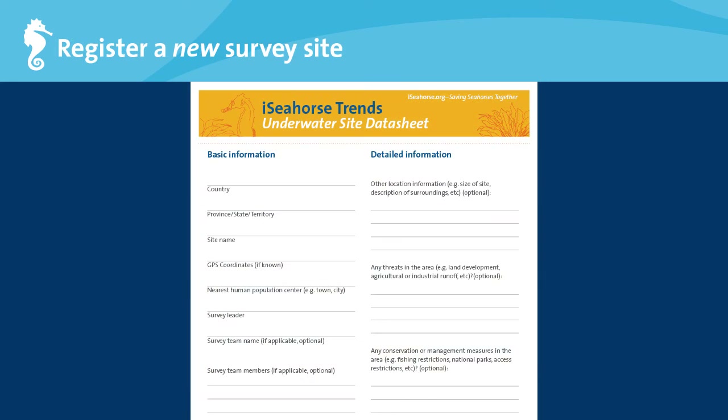Found a good seahorse survey site? Now it's time to fill in the underwater site data sheet with the site description. This includes the country, site name, and GPS coordinates if you have them. Also, try to include other location information such as whether the site is located within a marine protected area, is impacted by human activities such as fishing, the location of the nearest human population center, and who the most frequent area users are. You can find the underwater site data sheet in the iSeahorse Trends manual or as a separate PDF file in the course materials.